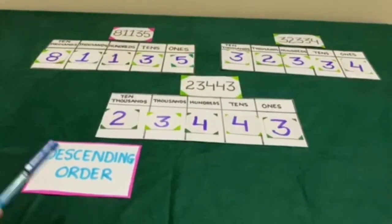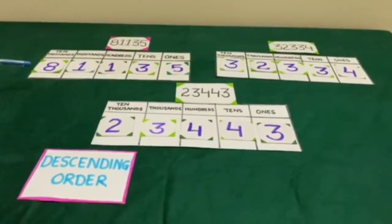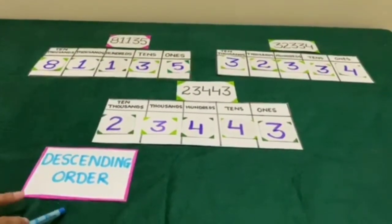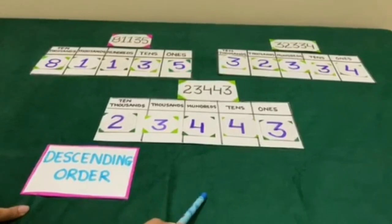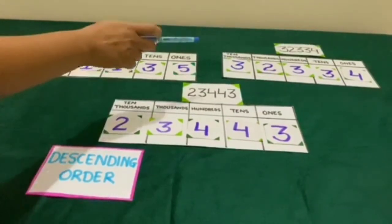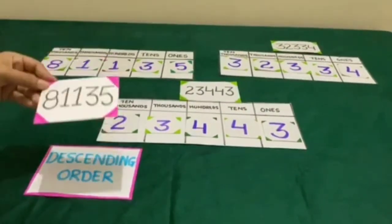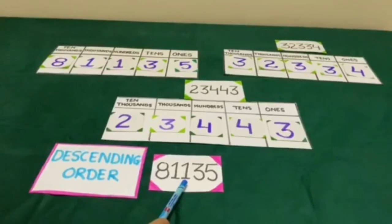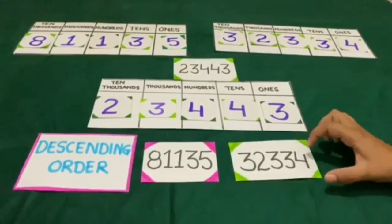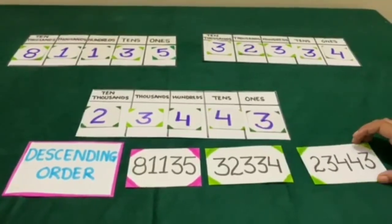Now we will arrange these numbers in descending order. Again we look at the digits at the ten thousandths place — here we have 8, 3, and 2. In descending order we write the greatest number first, then the smallest. The greatest among 80,000, 30,000, and 20,000 is 80,000. So the first number in descending order is 81,135, the second is 32,334, and the last is 23,443.